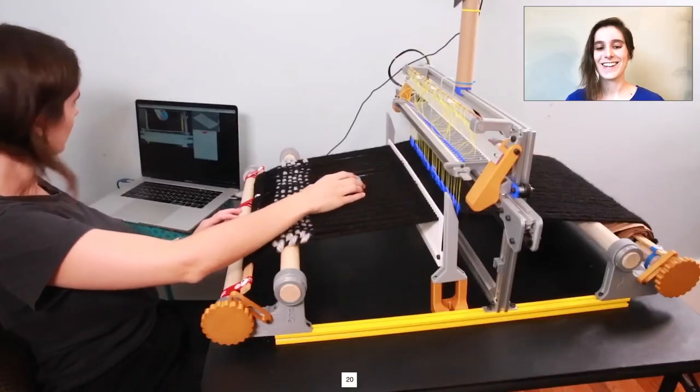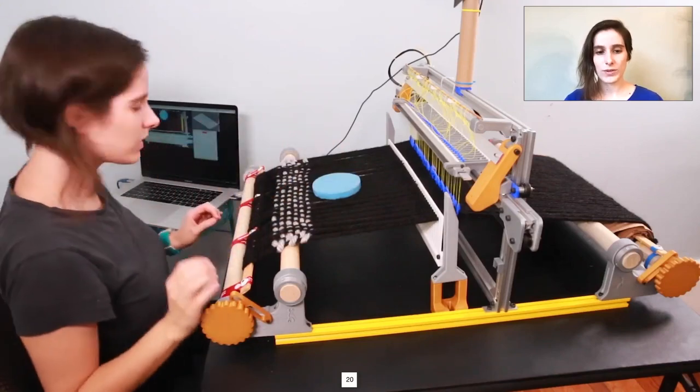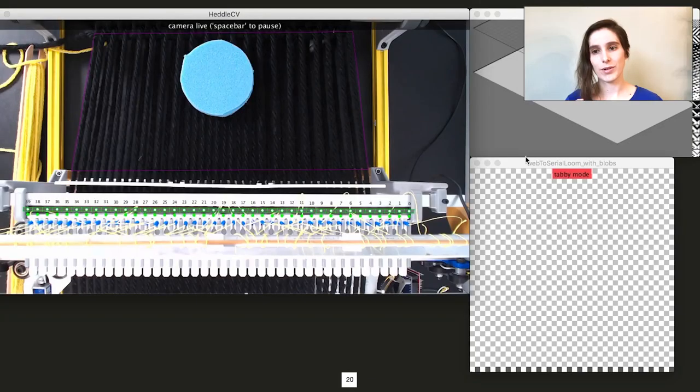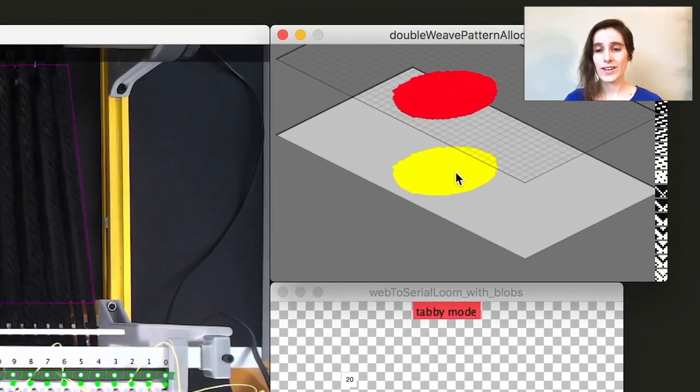We can use that as a basis for interactive weaving. In this demonstration, the weaver wants to weave a double cloth pocket to contain that foam disk. Double cloth weaving is a structure that many weavers, especially beginners, have a difficult time understanding. But by sensing the object and generating a correct scale viable weaving pattern, our loom can make this technique accessible.